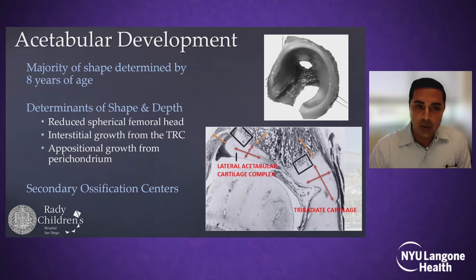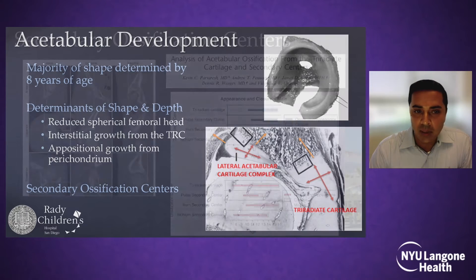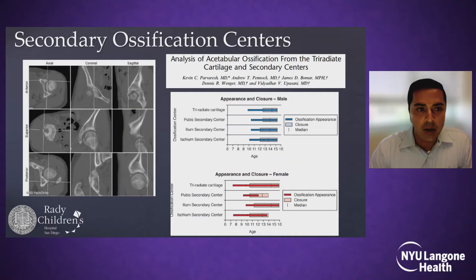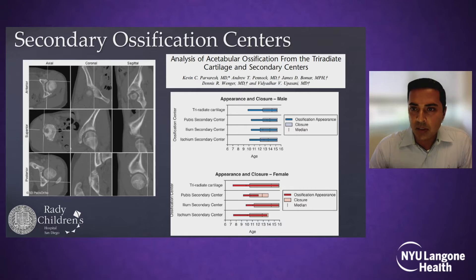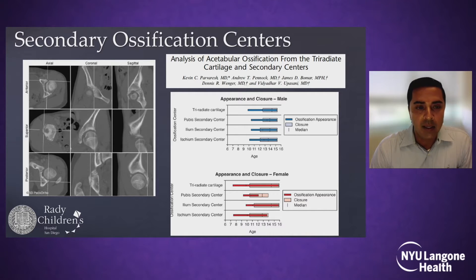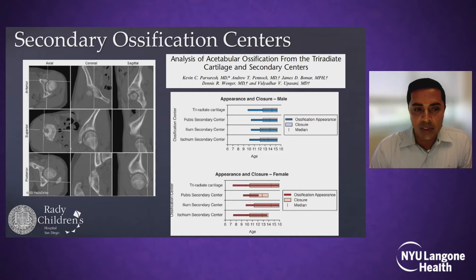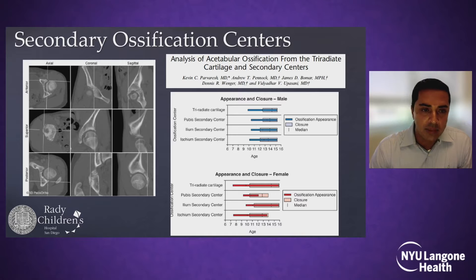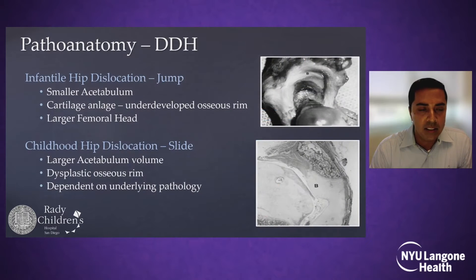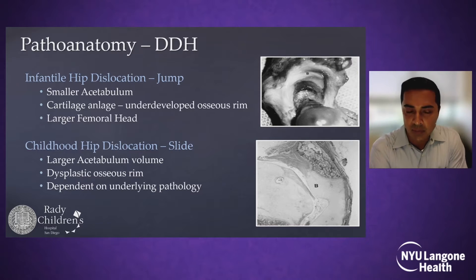We also heard that the majority of the shape is determined by eight years of age, but it's important to remember those secondary ossification centers that come from the triradiate cartilage, as well as each of those individual bones of the pubis, ilium, and ischium, and when they appear and when they close. So some of these hips that you see at nine or ten years of age that you're worried about maybe being retroverted or having decreased anterior coverage — some of that coverage shows up in the mid-teens. And then we've also talked about these two different types of dislocated hips.